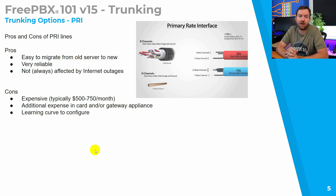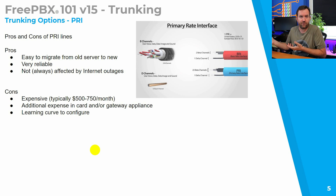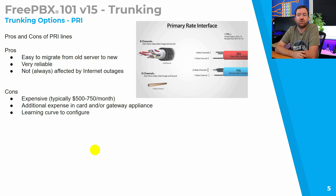Here are the pros and cons of PRI lines. Number one: they are very easy to migrate — just unplug the PRI from the old server and plug it into the new one. They are also very reliable and not always affected by internet outages, though if they're delivered over the same fiber as your internet and a backhoe cuts that fiber, your PRI can go down too. PRIs are typically expensive, in the range of $500 to $750 a month including usage, plus additional cost for the card or gateway appliance. There is also a slight learning curve to configuring PRIs in FreePBX, though it's really not that bad.